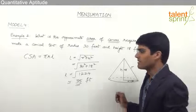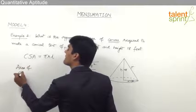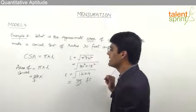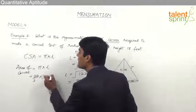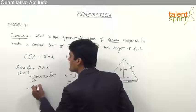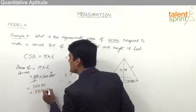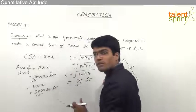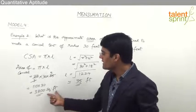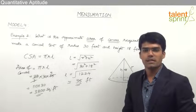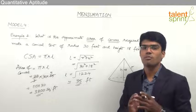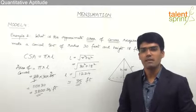Substituting into the formula, the area of canvas = πrl = (22/7) × 30 × 35. The 7 in the denominator cancels with 35 to give 5, so we get 22 × 5 × 30 = 110 × 30 = 3300 square feet. The units are square feet because this is area and the given lengths are in feet. So the total area of cloth required to make the conical tent is 3300 square feet. This is how we identify which formula to apply and substitute the given values to find the required answer.